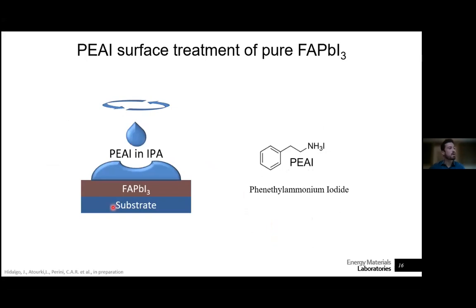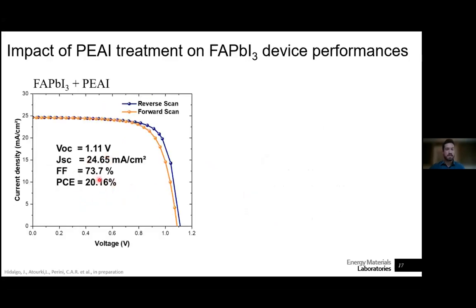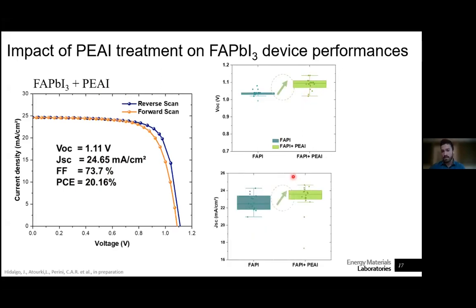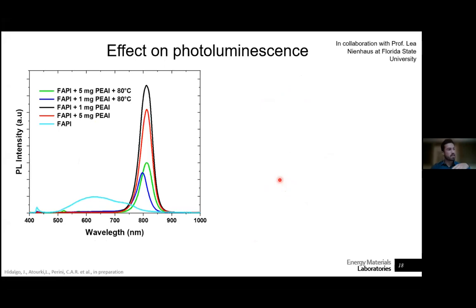As a concrete example: we take a formamidinium lead triiodide layer, surface-treat it with phenethylammonium iodide in isopropanol, fabricate solar cells, and get very nice efficiencies around 20%. There is an improvement with respect to the pristine untreated layer in both open circuit voltages — expected from reduced non-radiative recombination — and in the currents, which is a bit counterintuitive since we are adding an extra layer at the interface that might reduce charge collection efficacy. To understand this, we can examine photoluminescence in these layers.